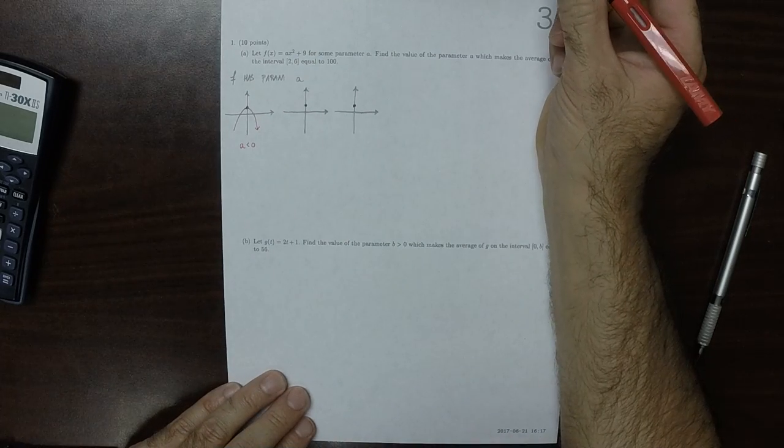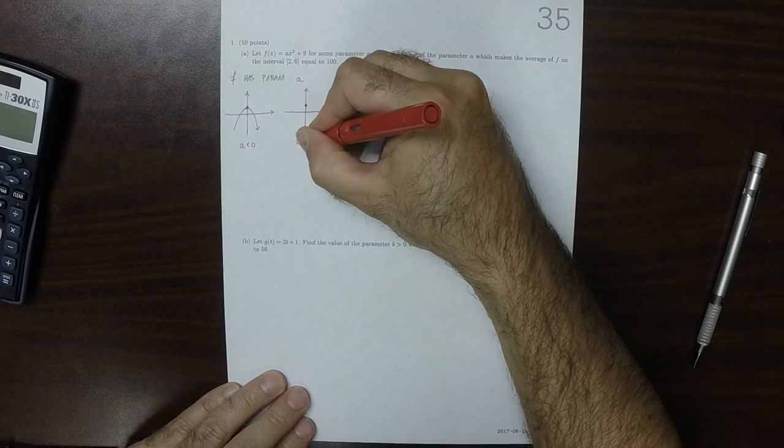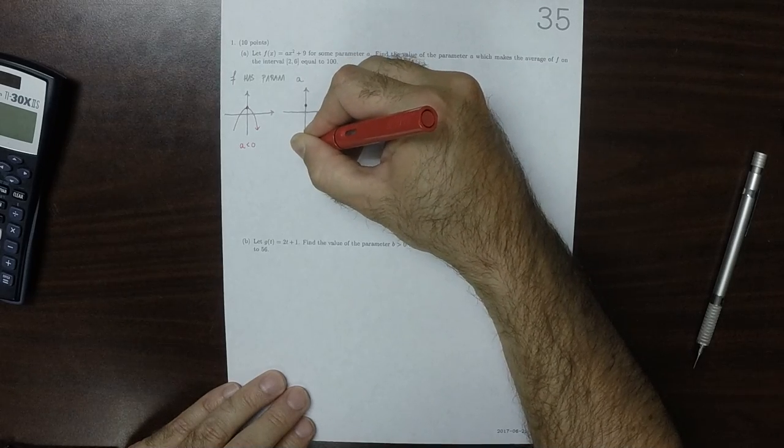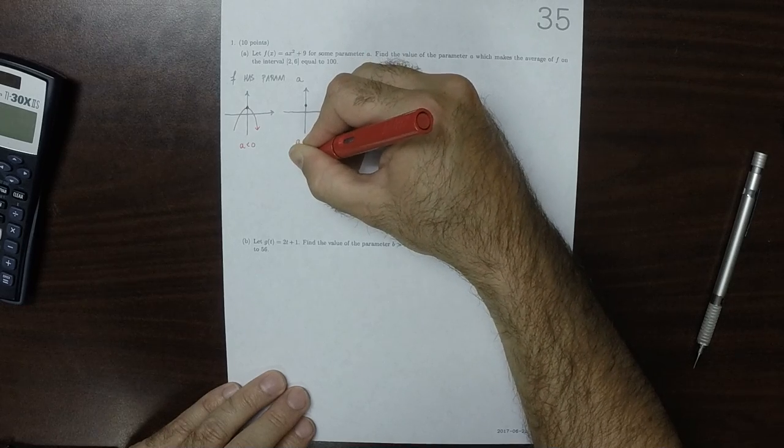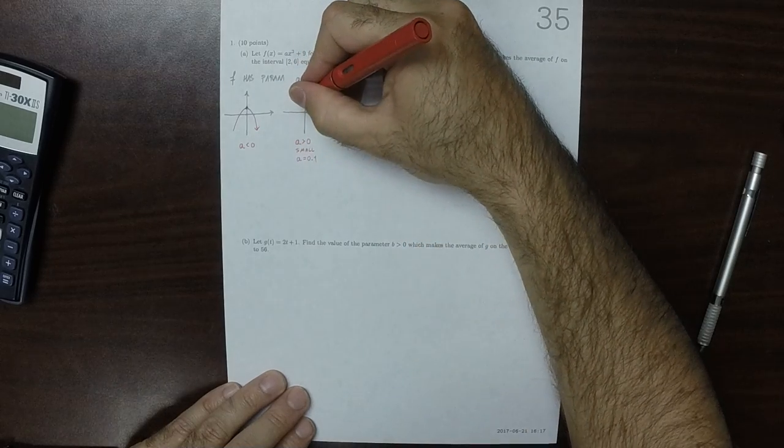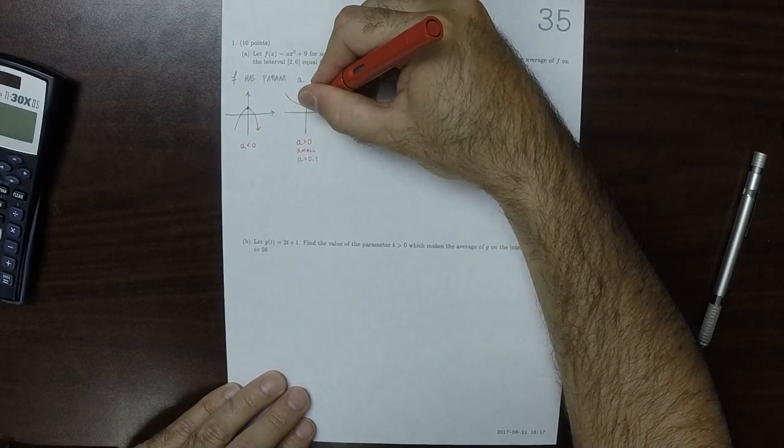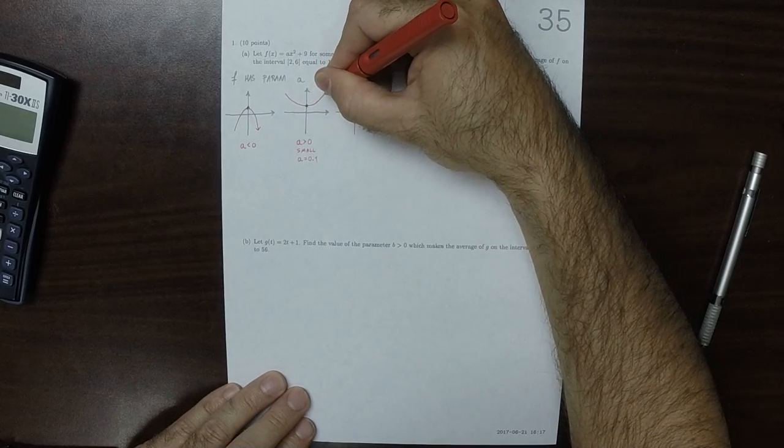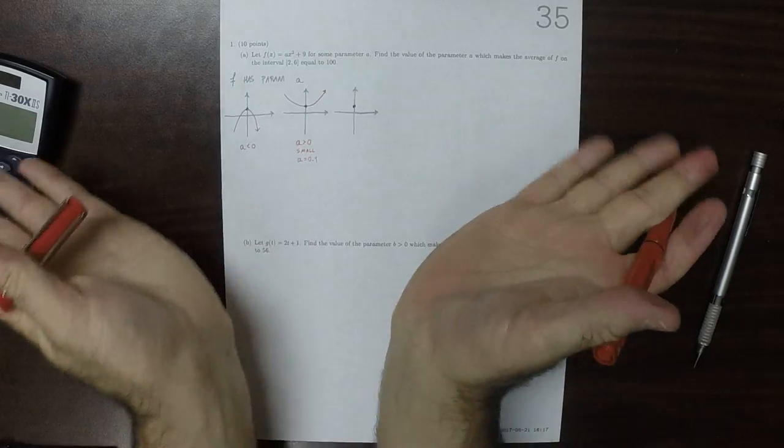If we use a positive a, and it's very small, say something like a is 0.1, then this will be a parabola that opens up, but quite shallow. It's kind of spread out.